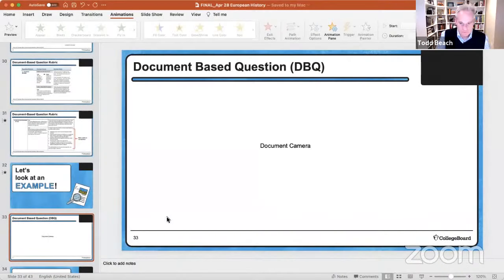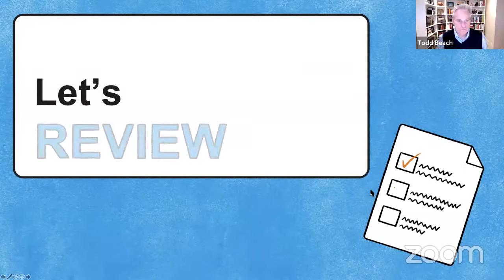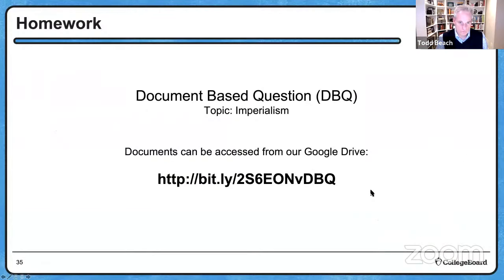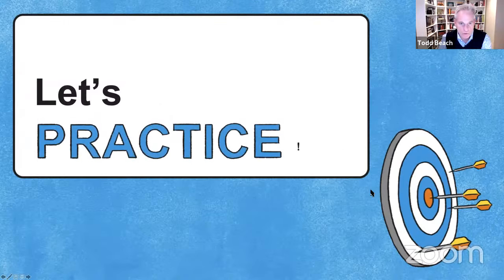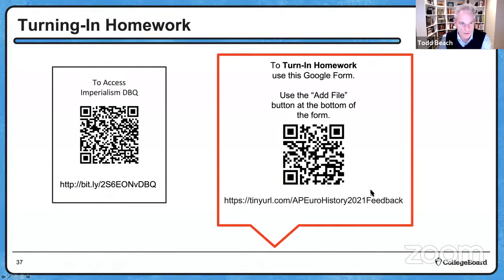We'll go back to the PowerPoint. There's your homework: the document-based question on the topic of imperialism, accessible at that bit.ly link. The QR codes are correct today and will get you into the document just fine. We're eager to read your responses, turn those around, and break them down point by point with feedback tomorrow.